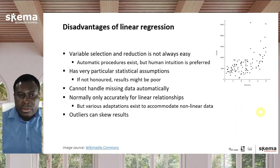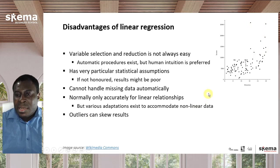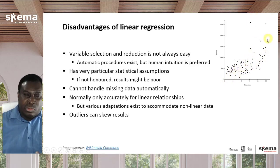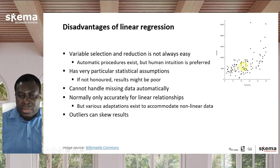One final disadvantage is that linear regression can be very much affected by outliers. In this graph, these two data points are far out from the rest. Whereas a linear line might go through most of the data points well, because of these two outliers the line would be pulled up and make the results less accurate. So you usually have to detect outliers and maybe remove them from your analysis, otherwise they might significantly affect the results so that you're not as accurate.